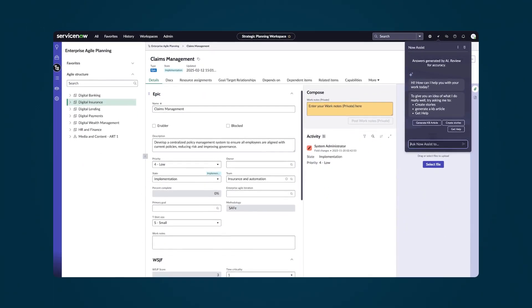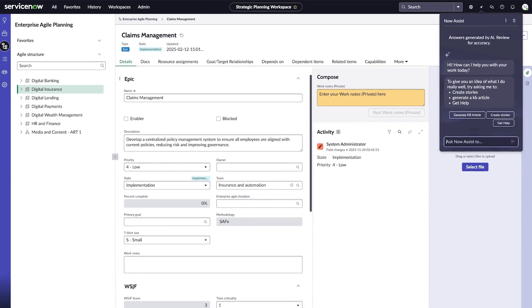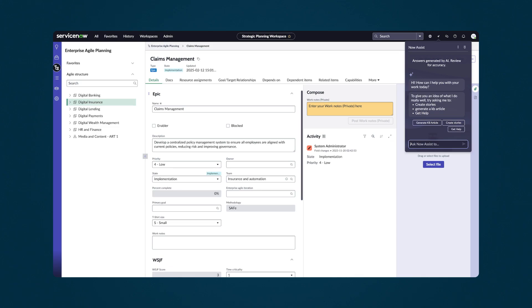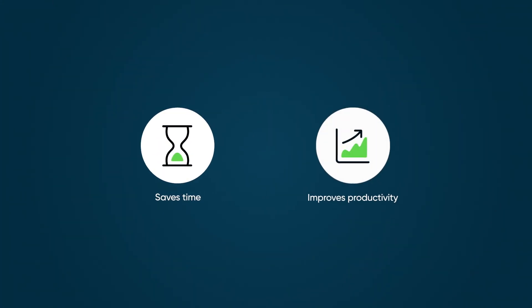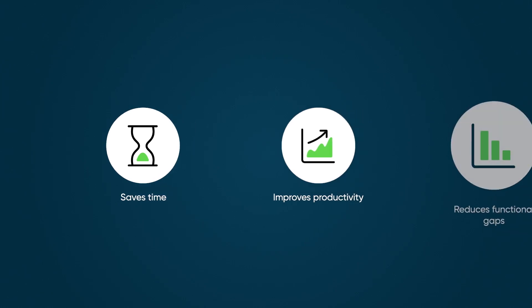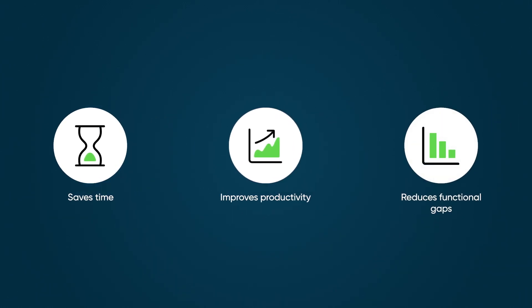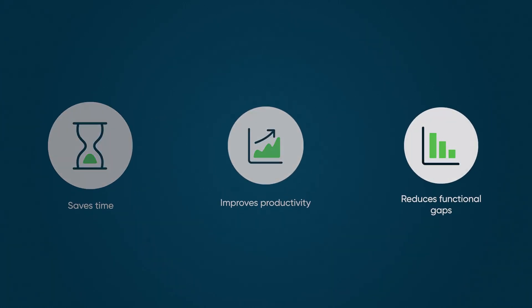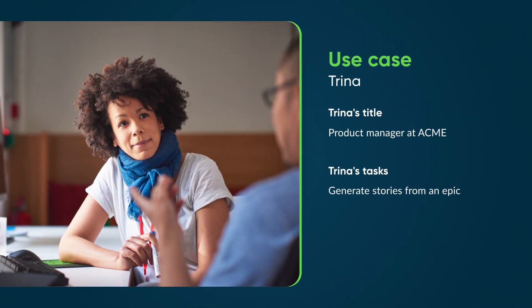Now Assist for Strategic Portfolio Management helps product managers and leads efficiently generate stories from epics within the strategic planning workspace in enterprise agile planning. This tool saves time and improves productivity by producing higher quality epics and stories with fewer functional gaps. Let's see how Trina, a product manager with Acme, uses Now Assist to generate stories from an epic.